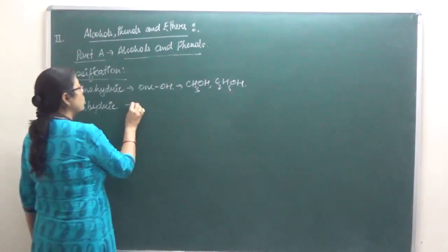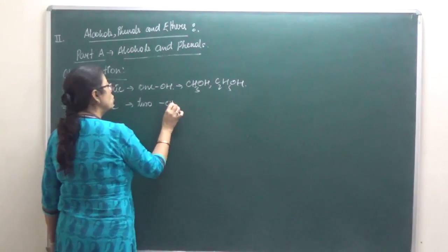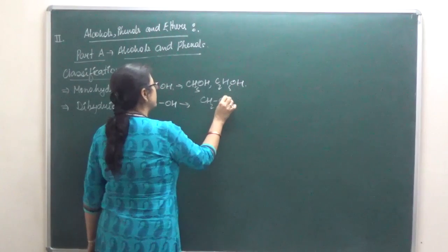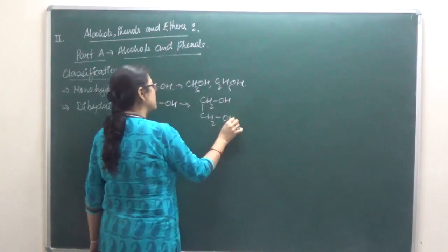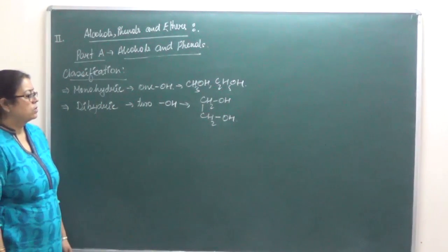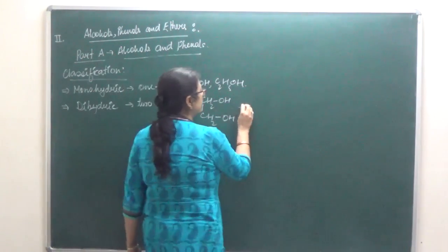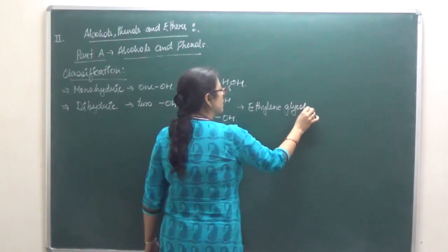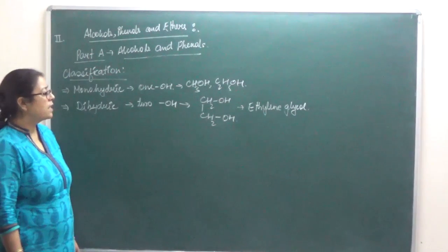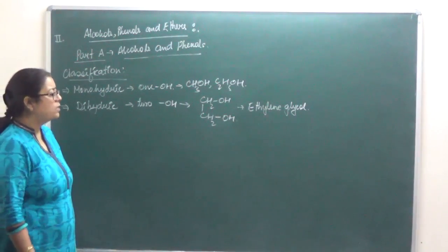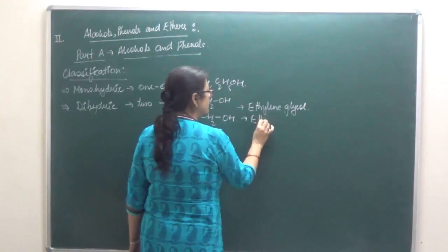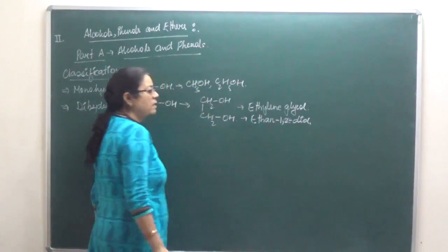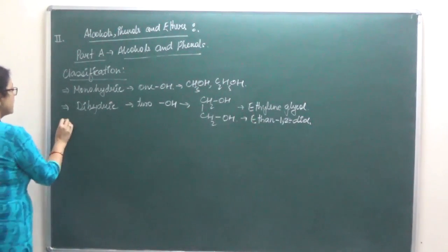Dihydric alcohols which contain two OH groups. For example, CH2OH-CH2OH. The common name is ethylene glycol. IUPAC name is ethane 1,2-diol.